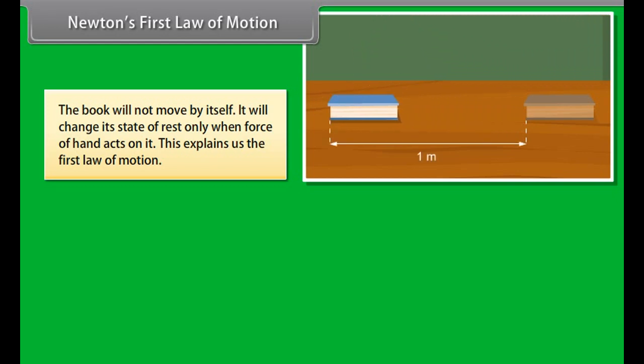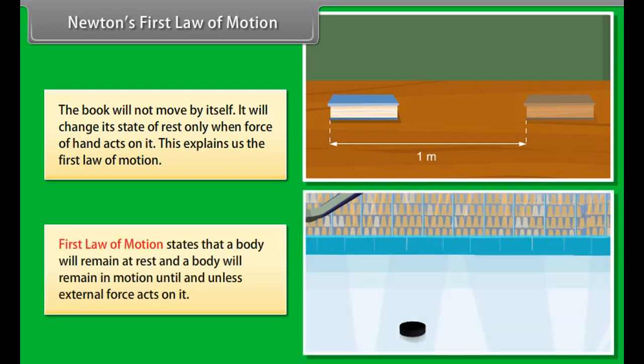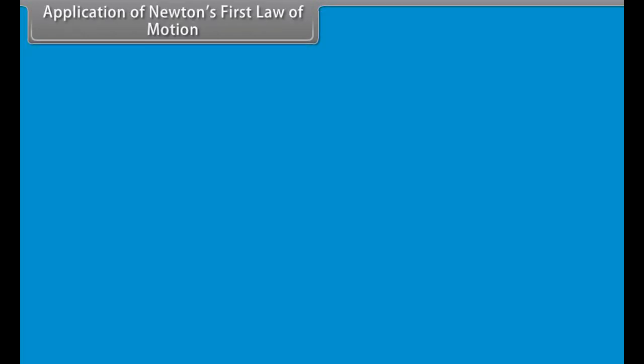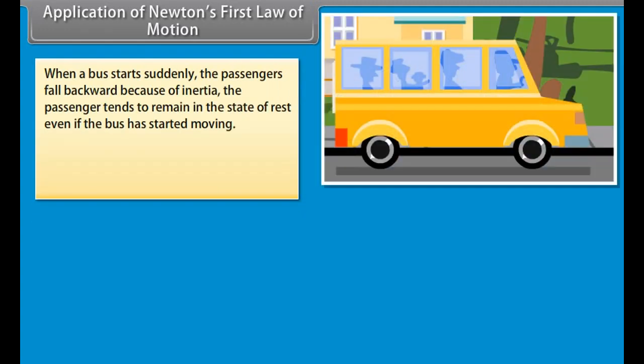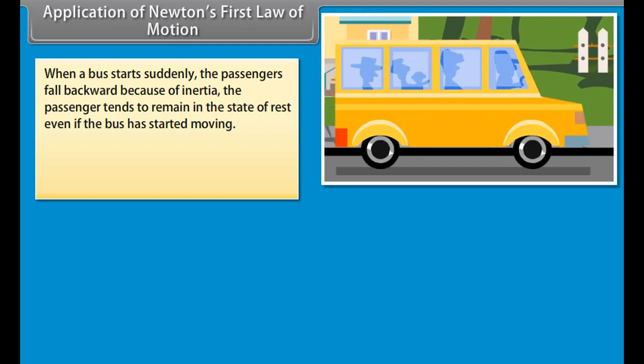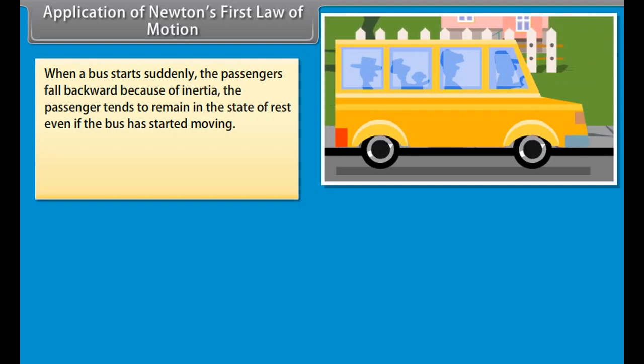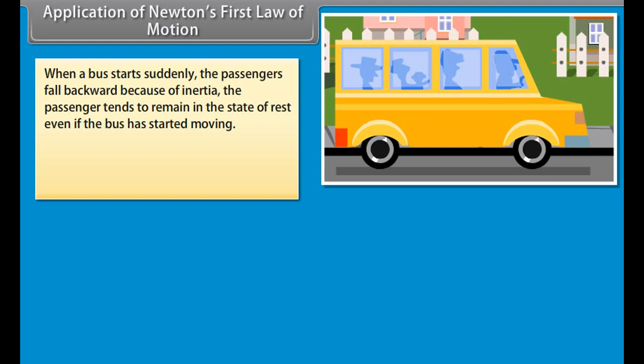Newton's first law of motion. The book will not move by itself. It will change its state of rest only when force of hand acts on it. This explains the first law of motion. First law of motion states that a body will remain at rest and a body will remain in motion until and unless external force acts on it.